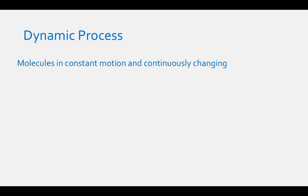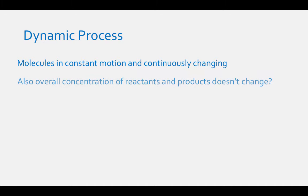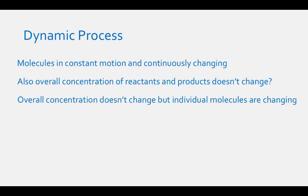When we say that chemical equilibrium is a dynamic process, we mean that the molecules of the reaction are in constant motion and are continuously changing. But we also said that chemical equilibrium means that the overall concentrations of reactants and products are not changing. The overall concentrations are not changing when a reaction is at equilibrium, but the individual molecules may be changing from products to reactants or from reactants to products.